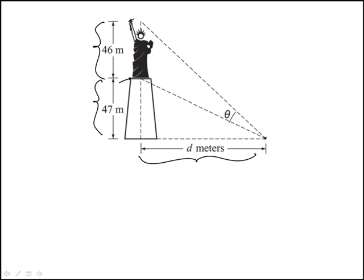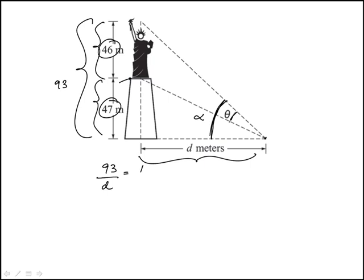Let me call this angle alpha. I can relate alpha to d using the total height, which is 46 plus 47, so that's 93. So tangent of alpha equals 93 over d.